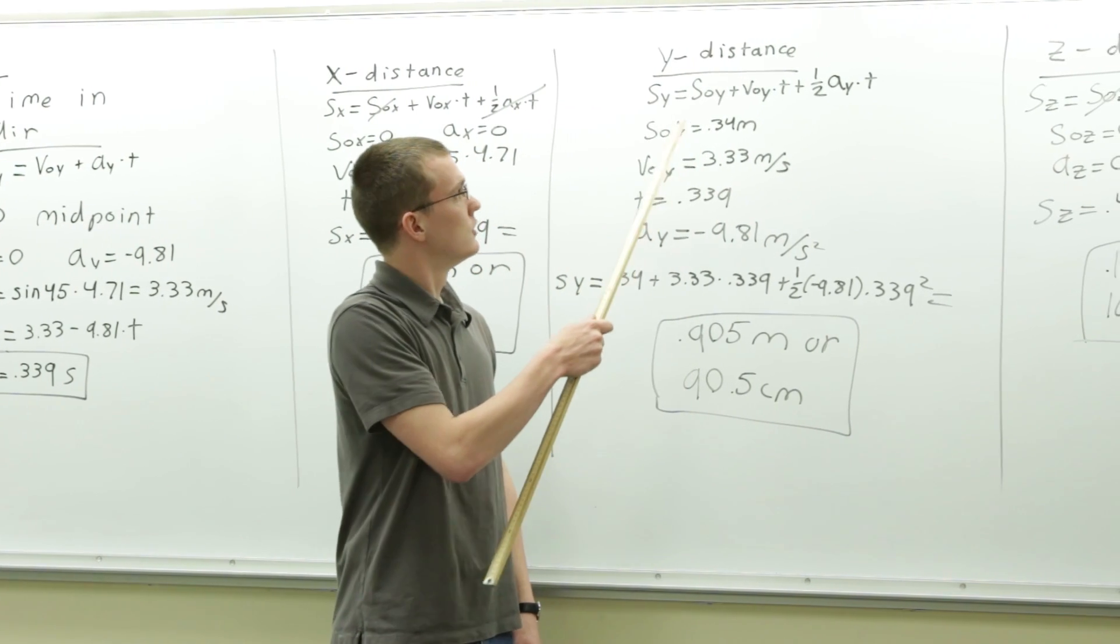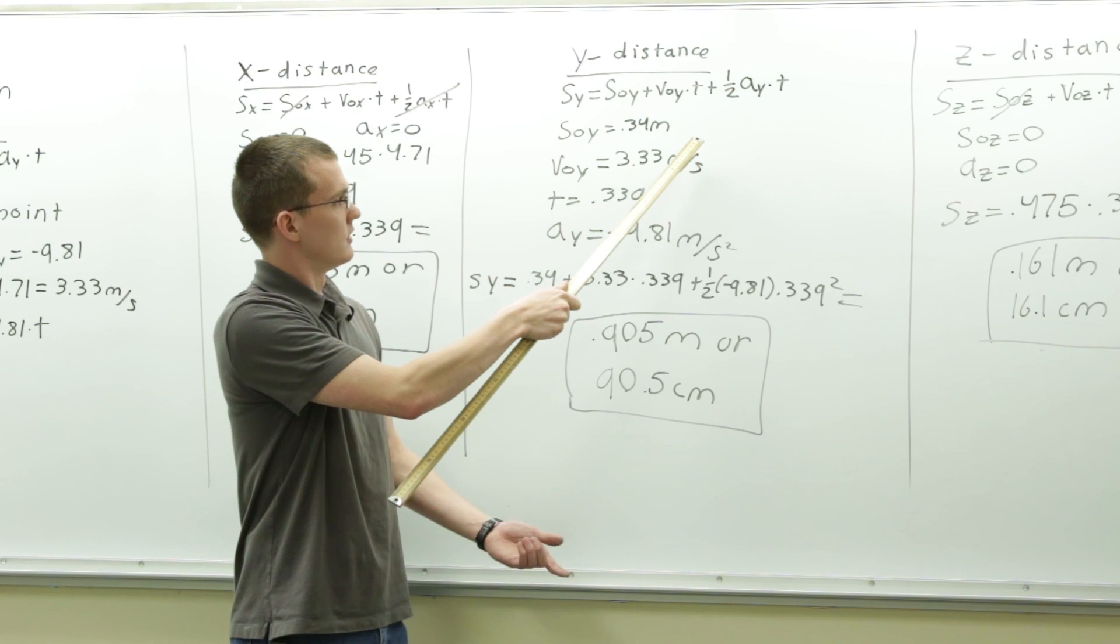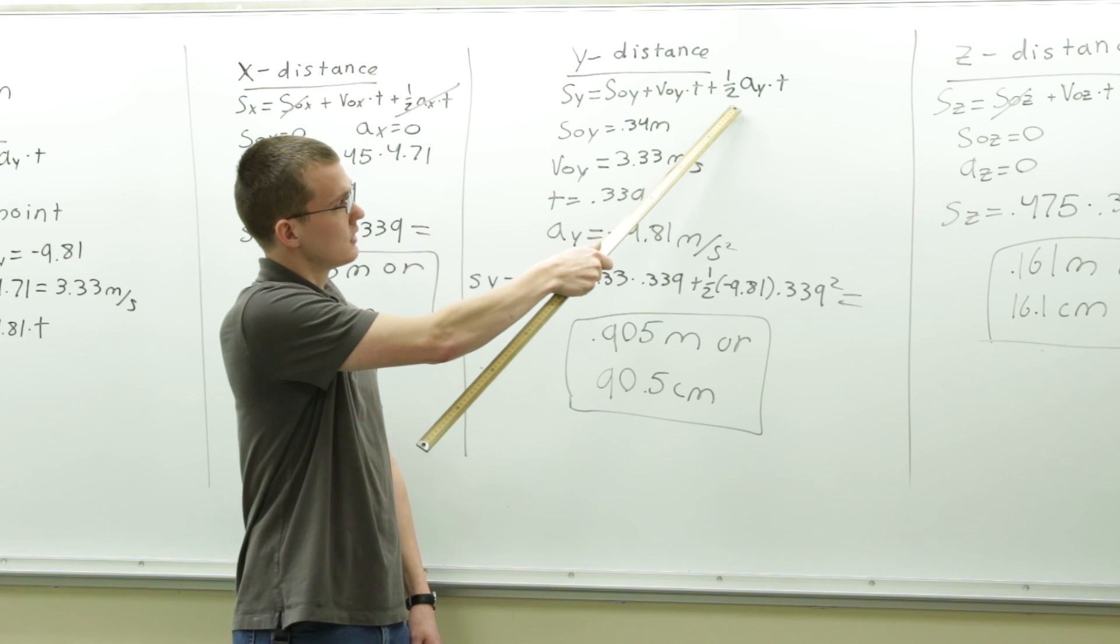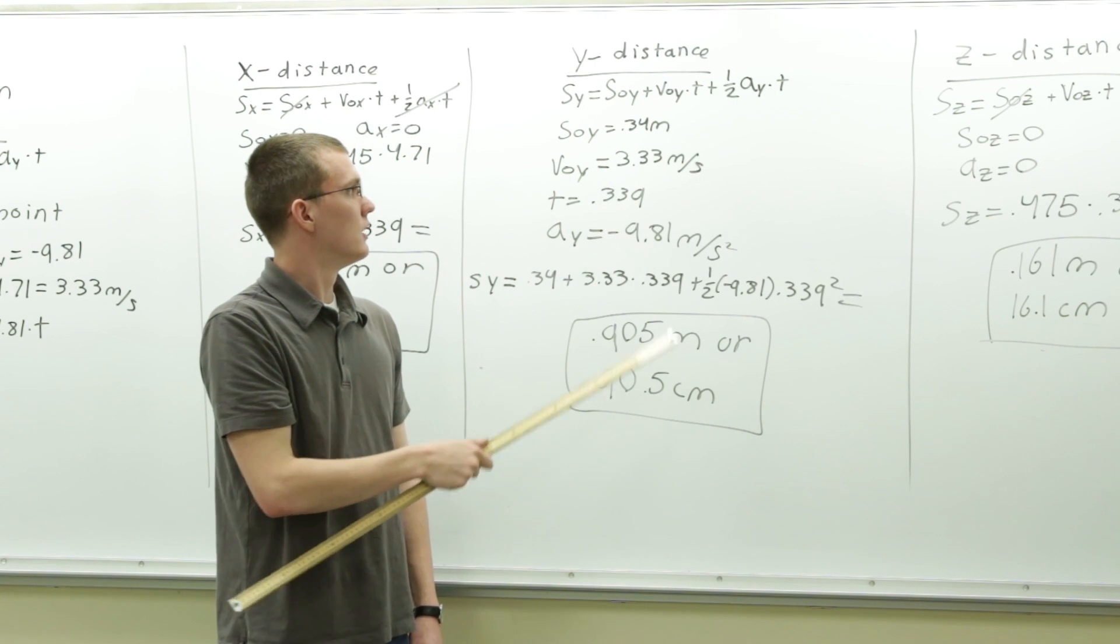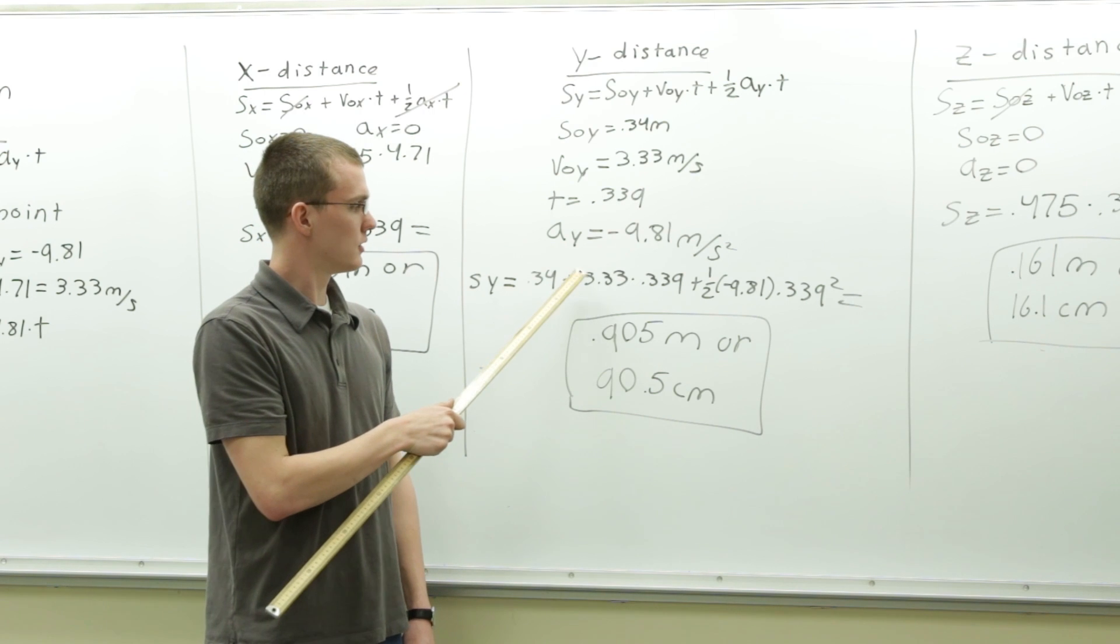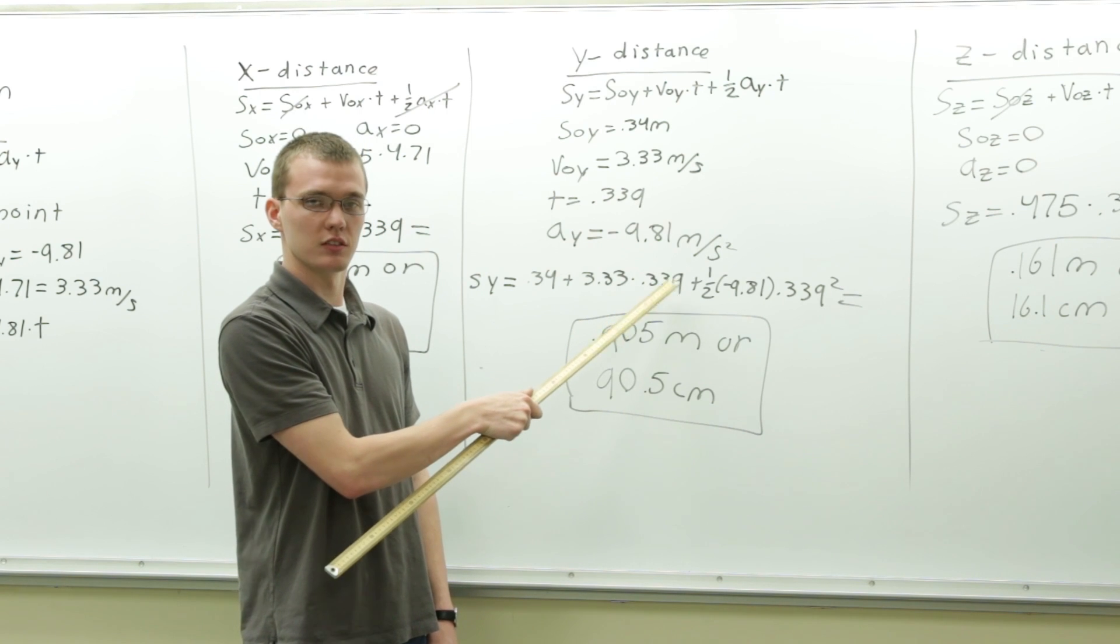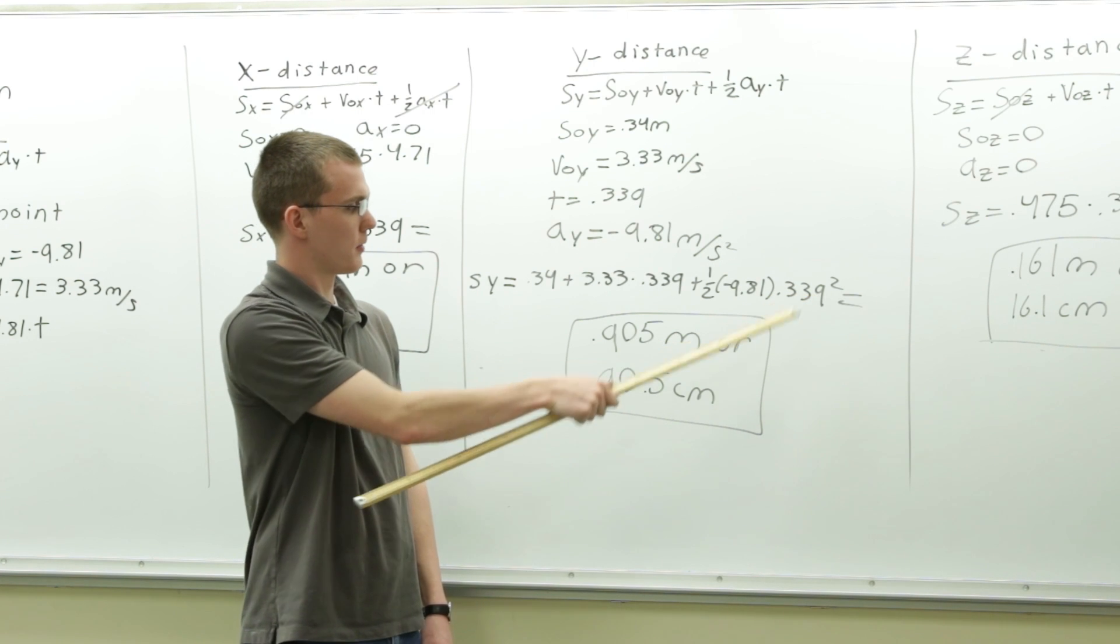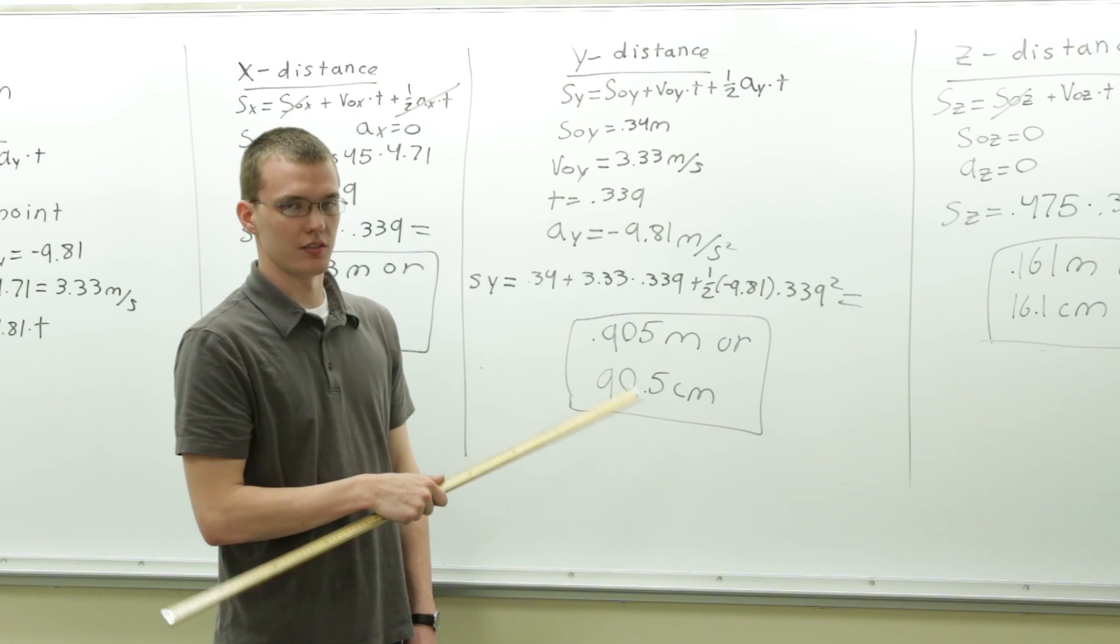Now we move on to the y distance. The y distance is the same exact equation as the x. The difference is that we have acceleration in the y, which is equal to gravity, and we have an initial y position. So, the position in the y is equal to 0.34 meters plus 3.33 meters per second times 0.339 seconds plus one-half times the acceleration due to gravity times time squared. And this is equal to 0.905 meters or 90.5 centimeters.